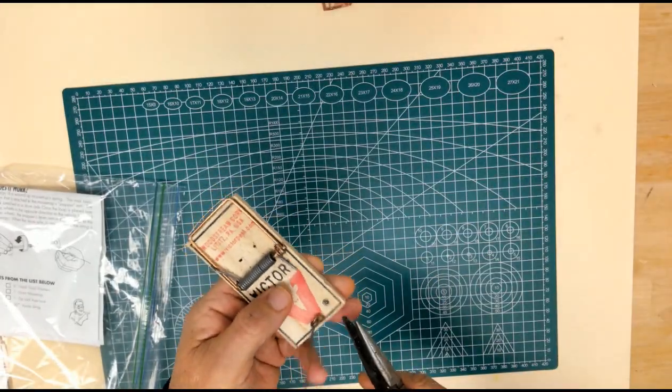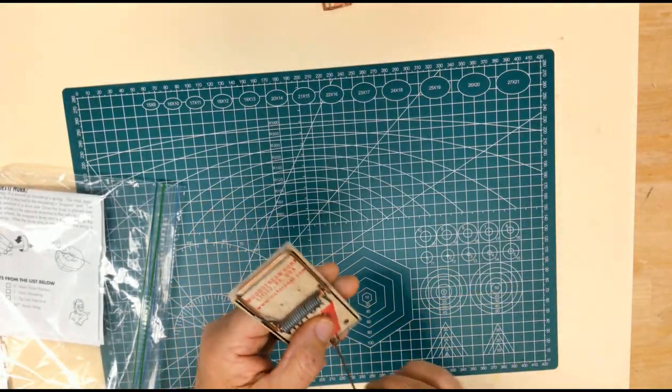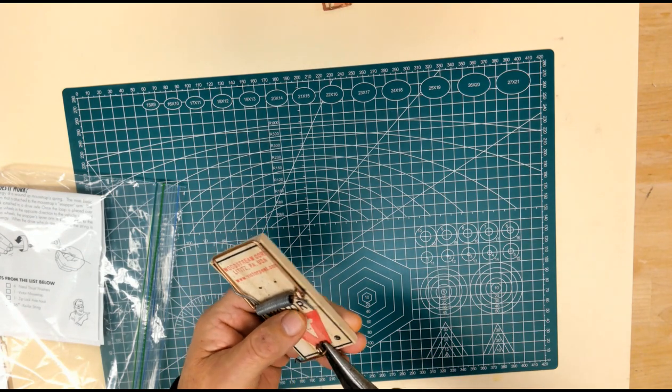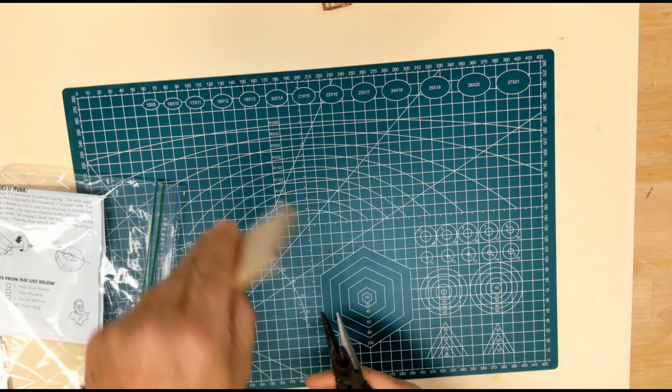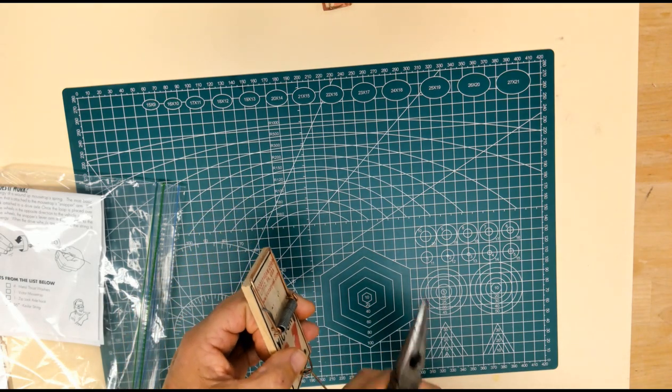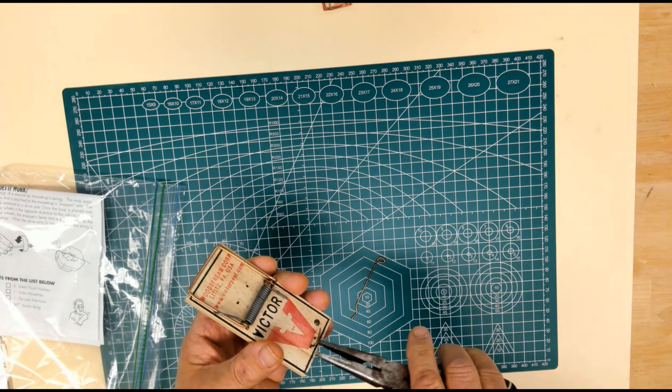Don't get it thrown away. But the staple that's holding it to the mousetrap, that is not needed. And again, grab one side and twist it.